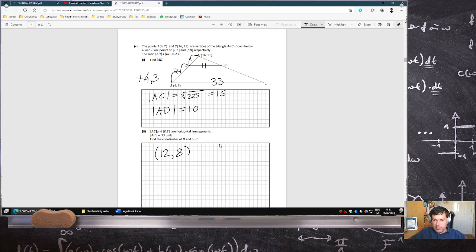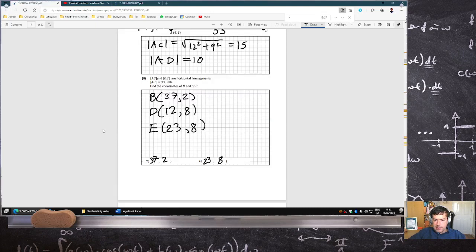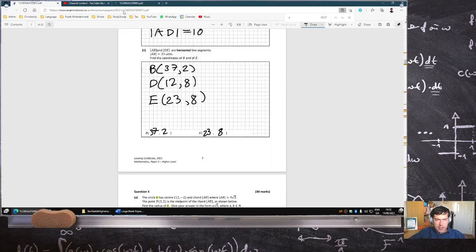That's 12, but it's 11 units cross, so that one would be 12, 19. So, that second point there is 12, 19. I think that's what I got last time, isn't it? 37, 2. Oh, 23, 8. What did I do? Must have made a silly number mistake with my addition. 37, 2.